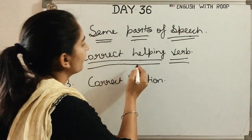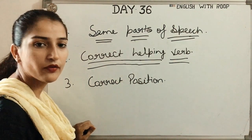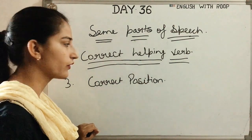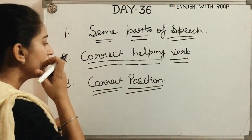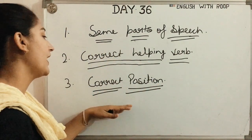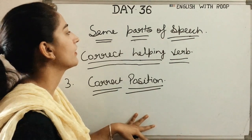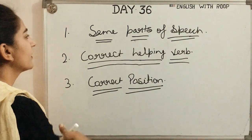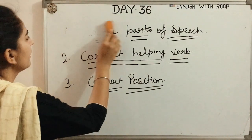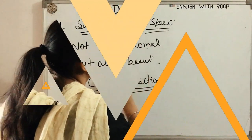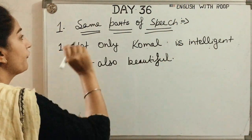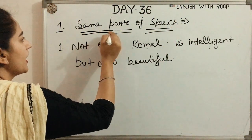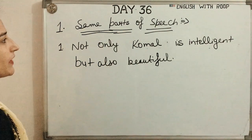Either I can sing, nor I can dance — but a better way to say it is: I can neither sing nor dance. This is a shorter sentence but more impressive. Neither and nor go together to express that both options are negative.